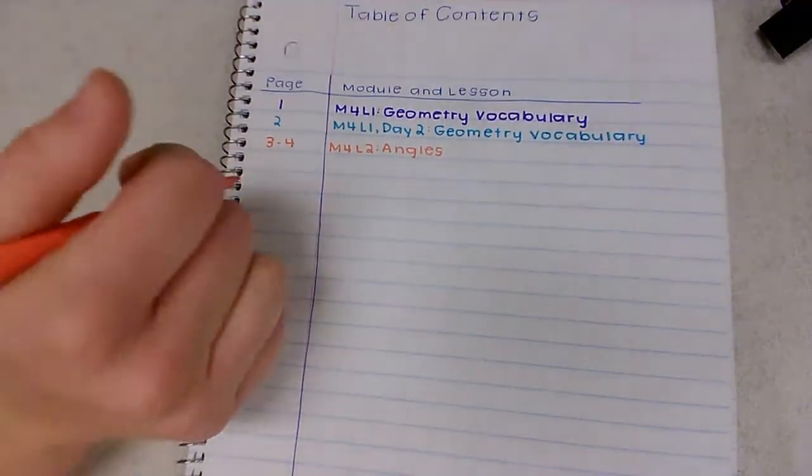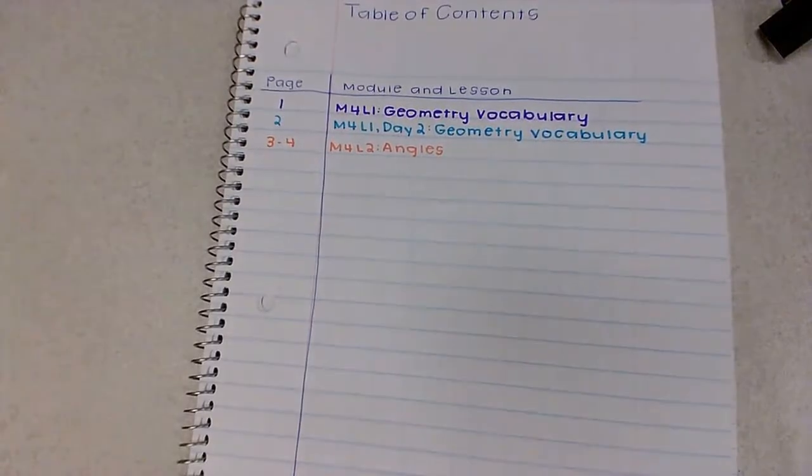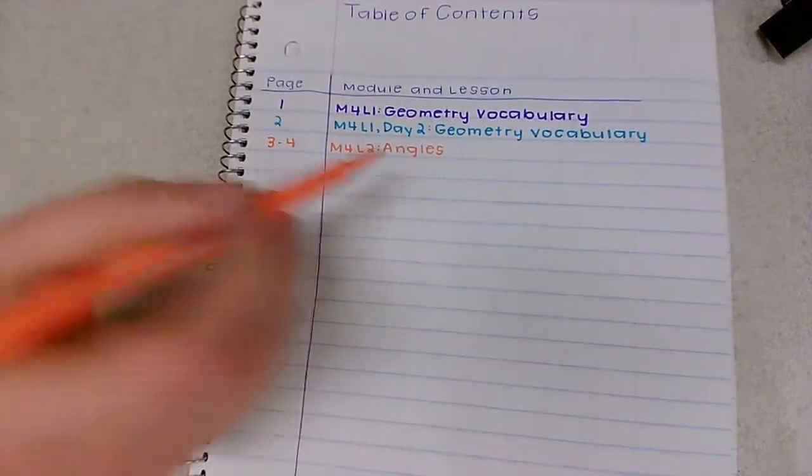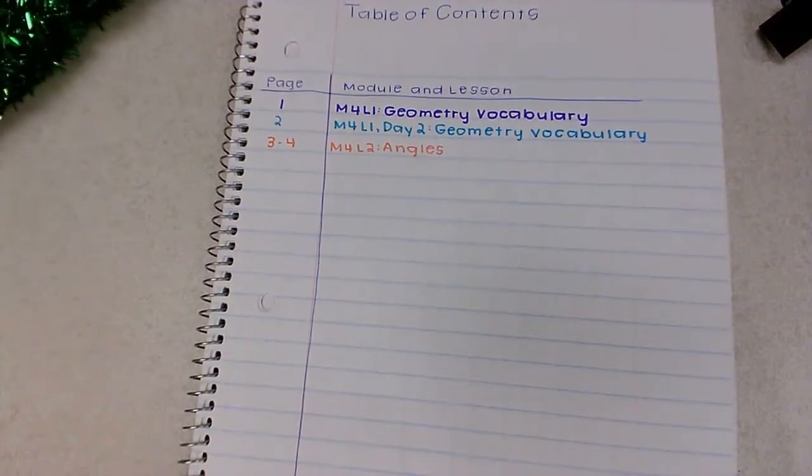Fourth grade, this is our first two note page lesson of module four. It's module four lesson two and today we are going to be working with angles. Take a moment to label your table of contents, pause this video if you need to, and then we're gonna get started.